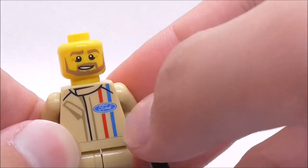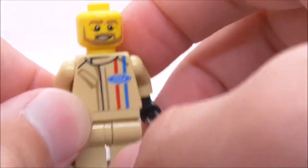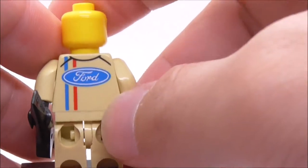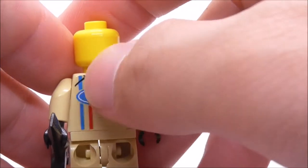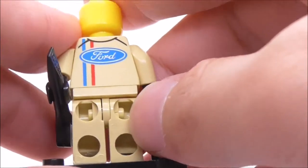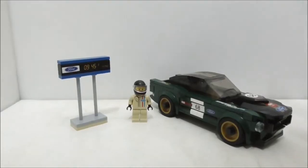And the torso print: you have this jacket with this pocket right here, you have the Ford logo, you have the blue and red stripes, you have some black lining. And this is the back torso printing. You have the Ford logo and you also have the blue and red lining. And yeah, aside from that, that's pretty much it for the minifigure.